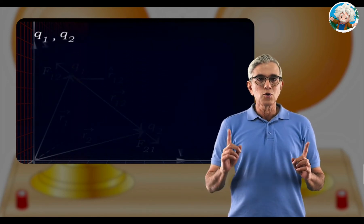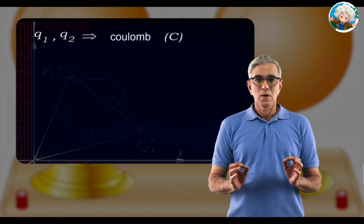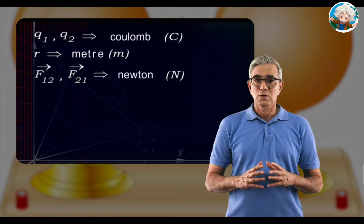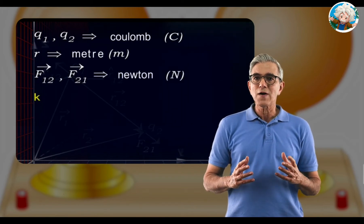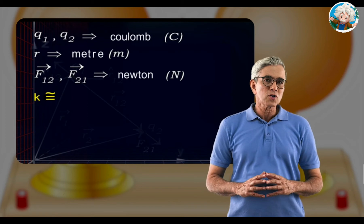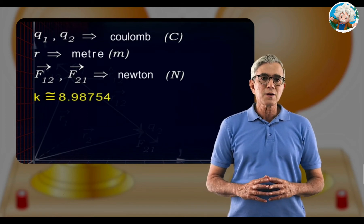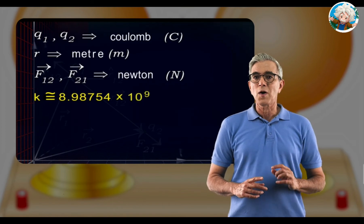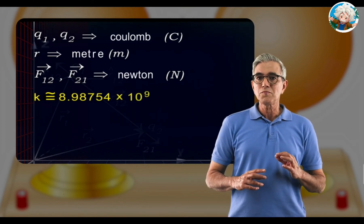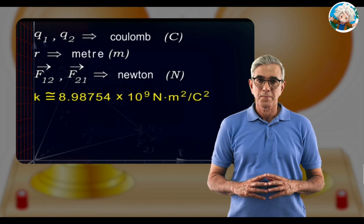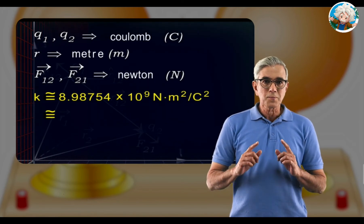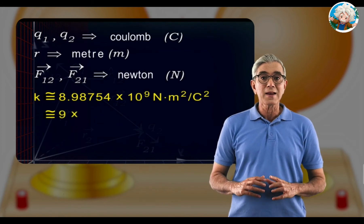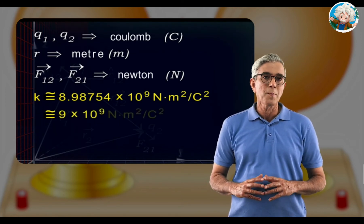If q1 and q2 are measured in coulombs, r in meters, and forces in newtons, the experimental value of k is approximately 8.98754 × 10⁹ N·m²/C², which is approximately equal to 9 × 10⁹ N·m²/C².